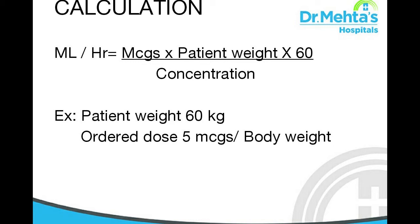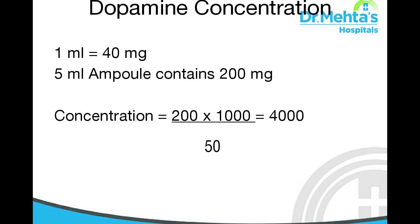Example: patient weight is 60 kg, ordered dose is 5 mcg per kg per minute. Dopamine concentration: 1 ml equals 40 mg; a 5 ml ampoule contains 200 mg. Concentration equals 200 multiplied by 1000 divided by 50, equal to 4000. This 1000 converts from mg to microgram.